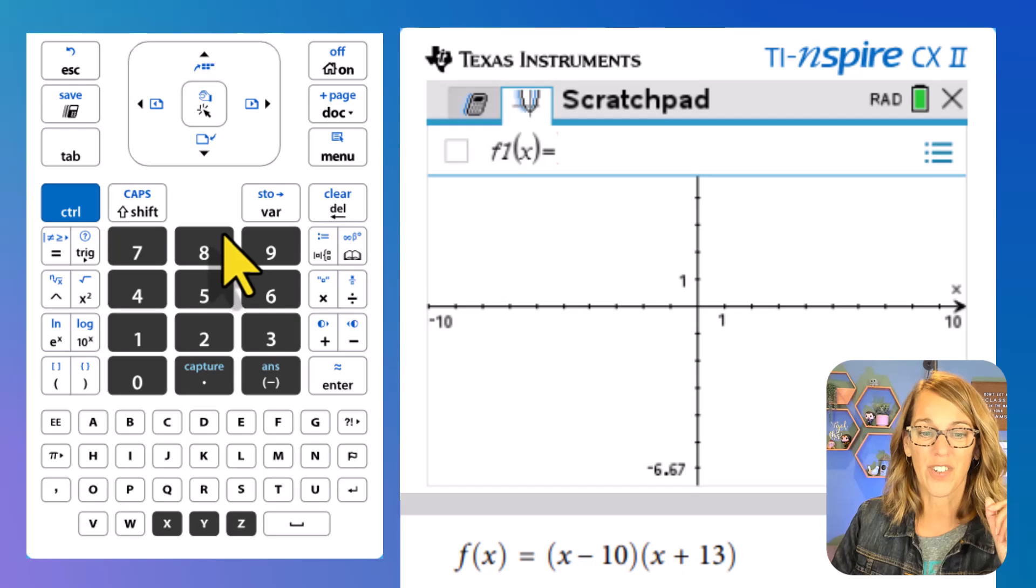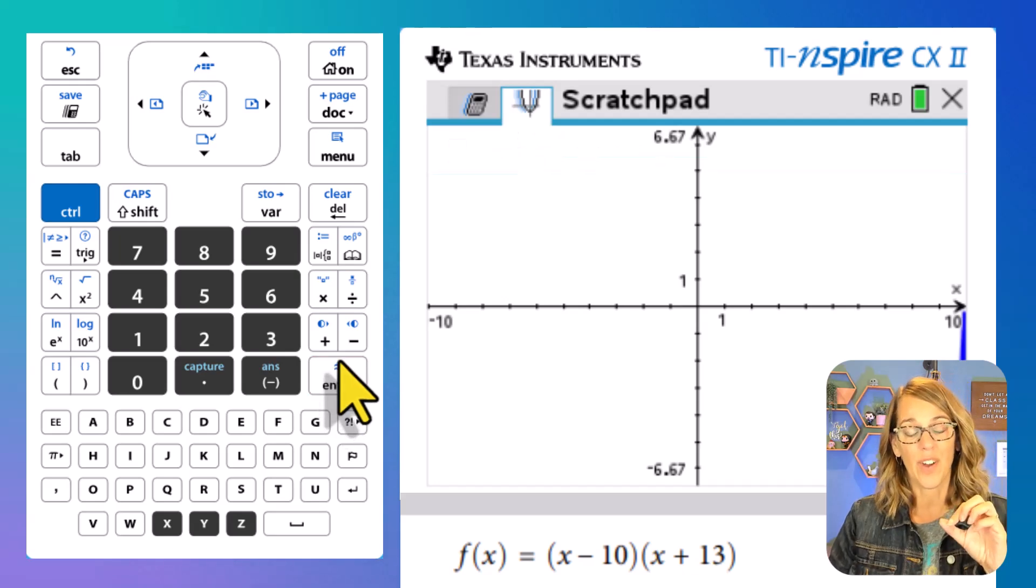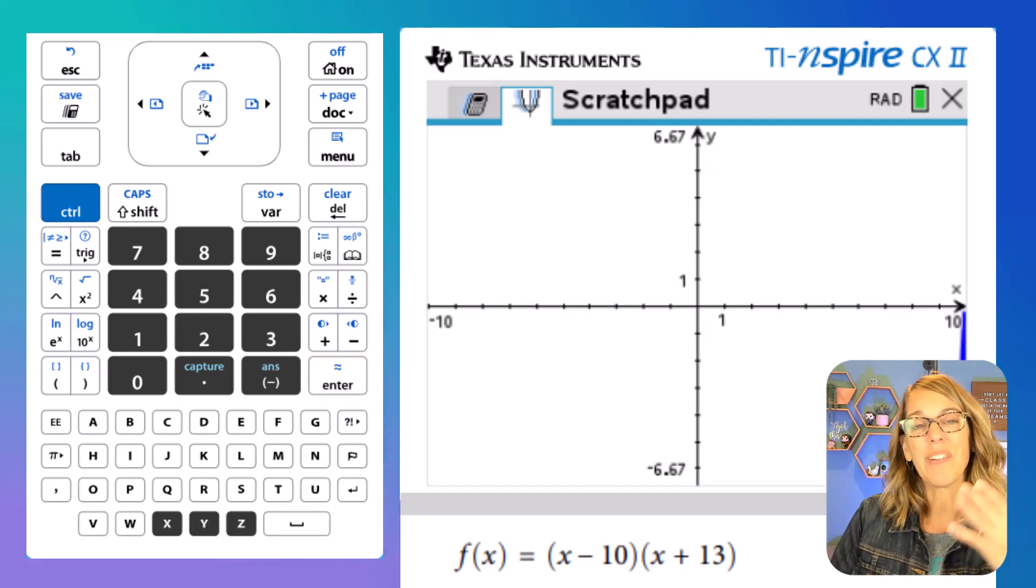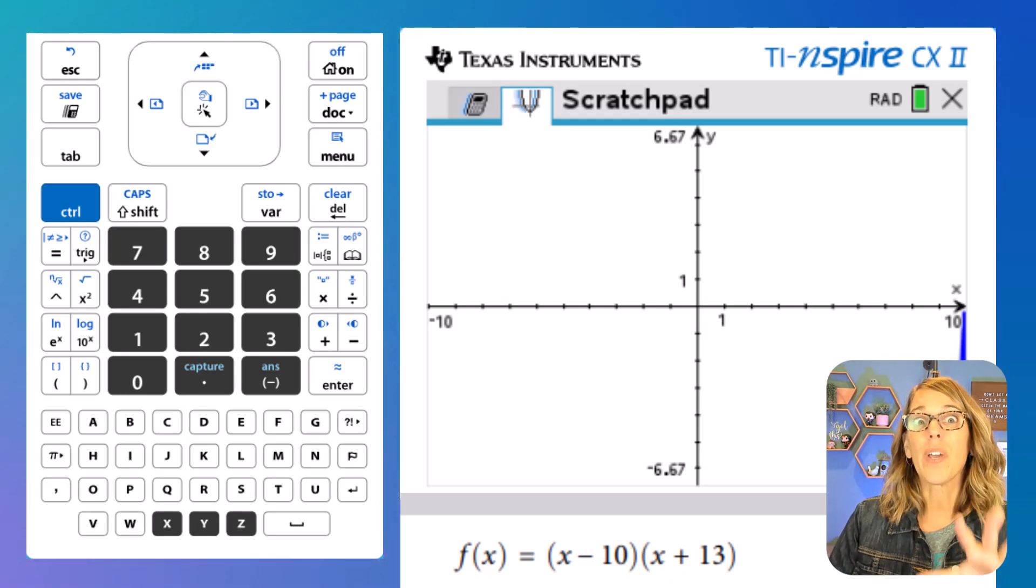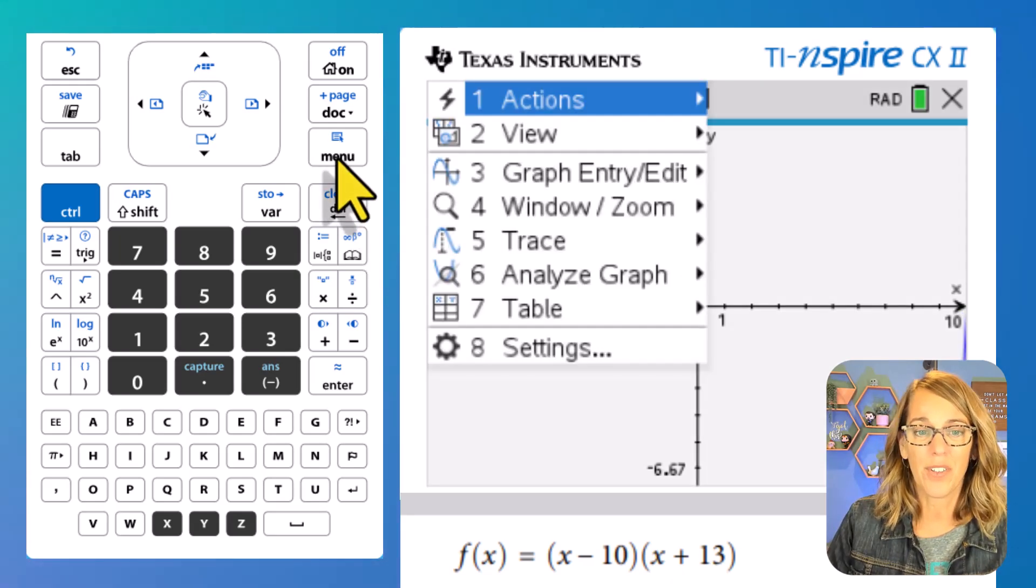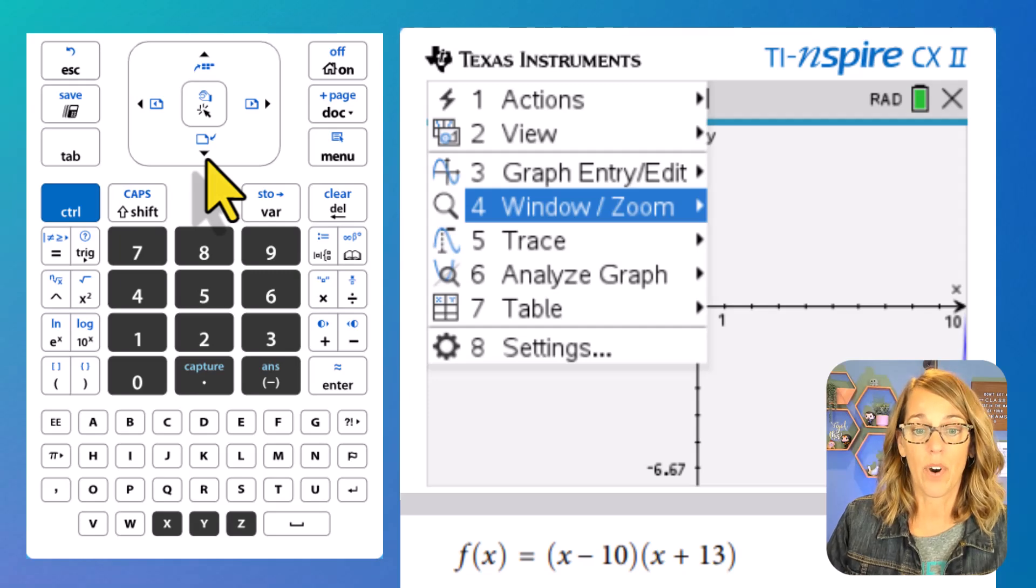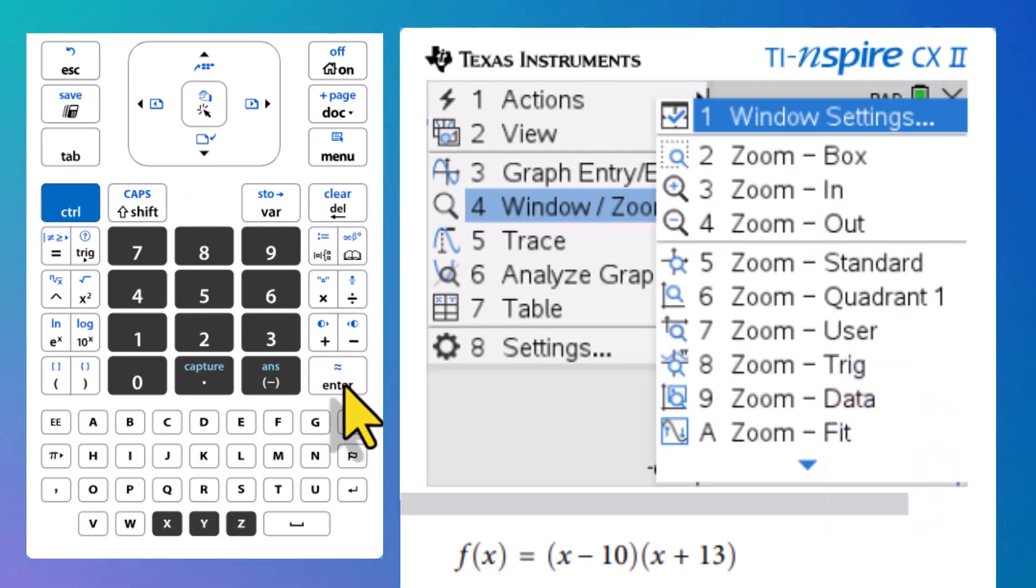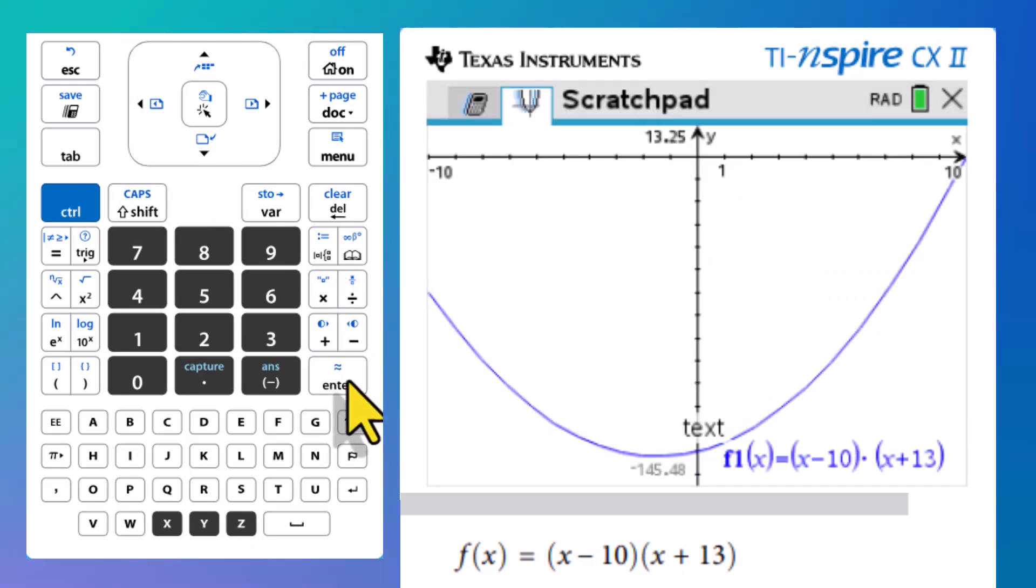So let me go ahead and type it in. And then we'll hit enter to graph it. Now I can't really see it. So we need to do a zoom here. And I'm going to do a zoom fit, because that is the quickest way to get to your function, and it almost always works. So to get there, we're going to go to the menu, and then we want to change the window zoom. So we're going to go down there to number four, and then enter. And we want a zoom fit, which is letter A. So going down to letter A, and then enter, we have a pretty good view of what that looks like.